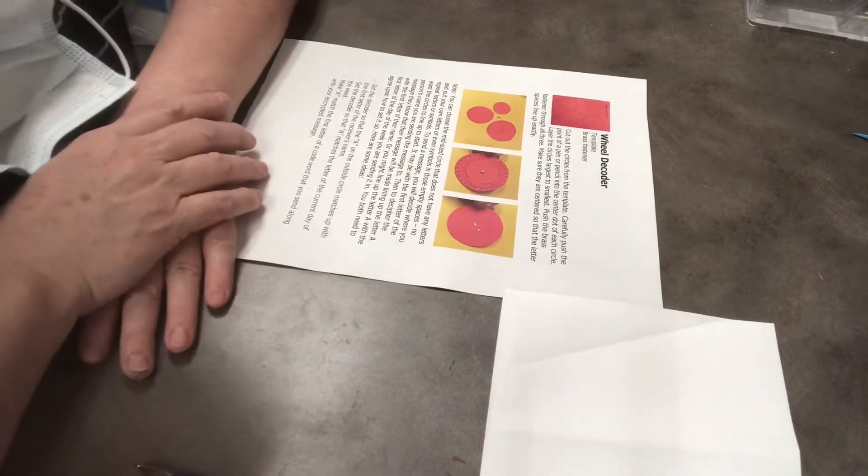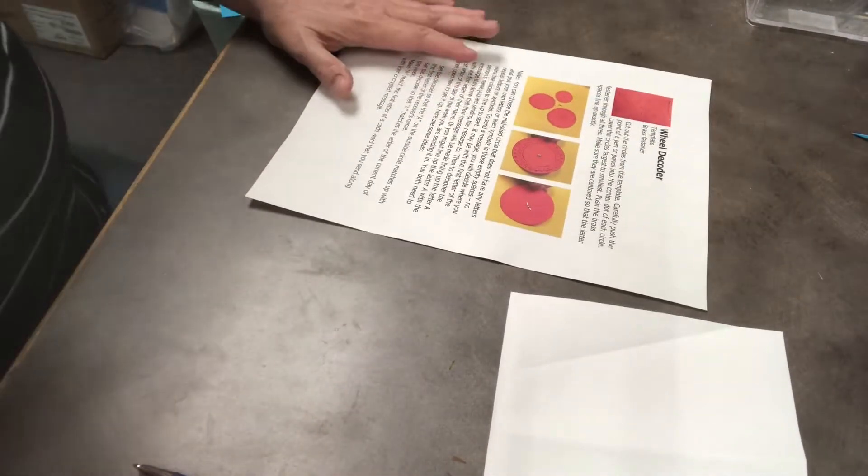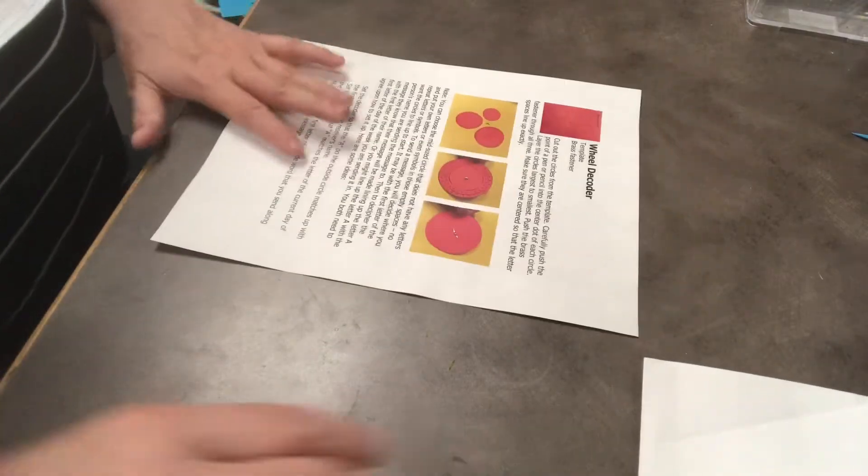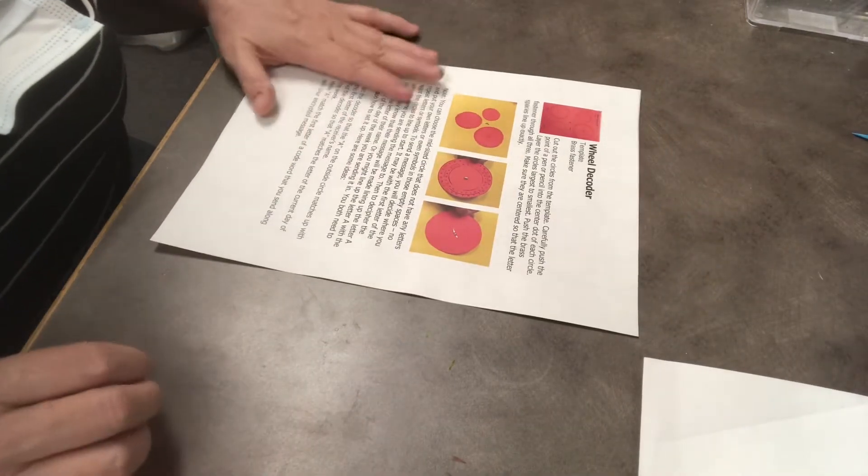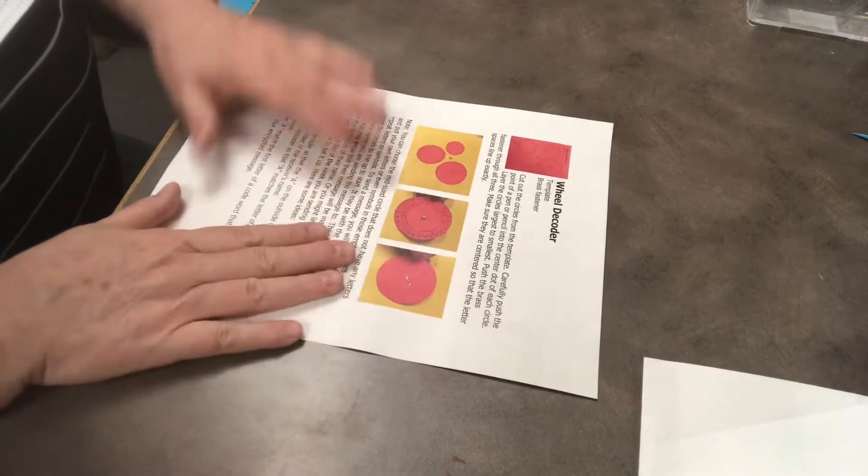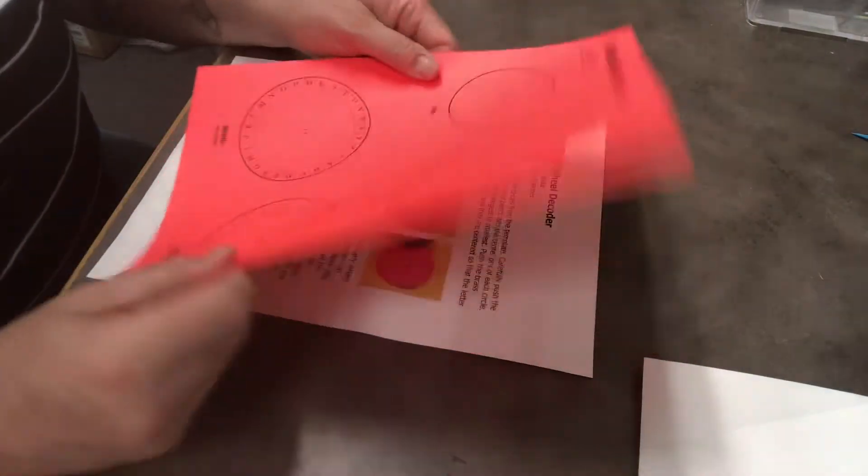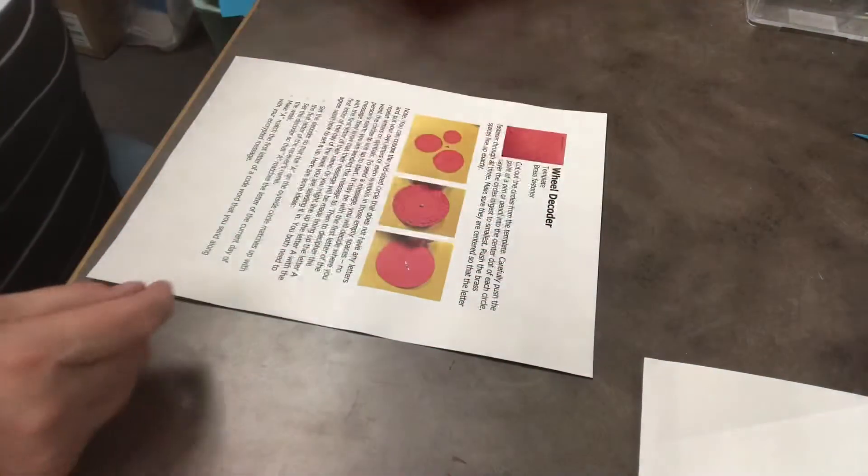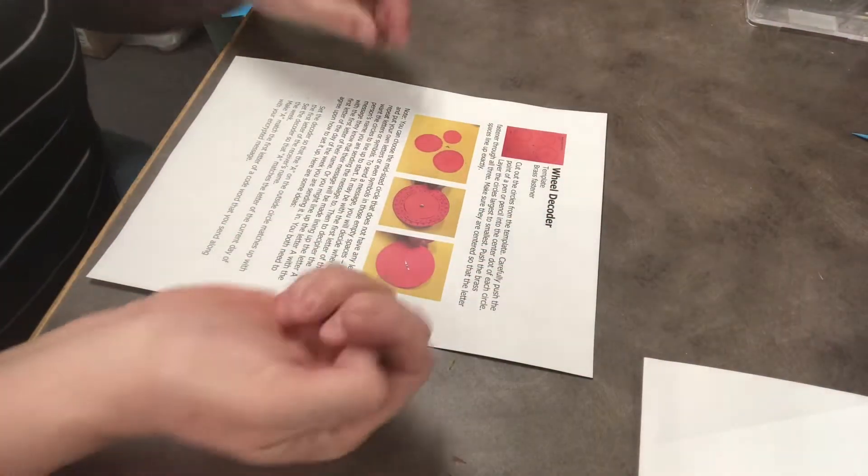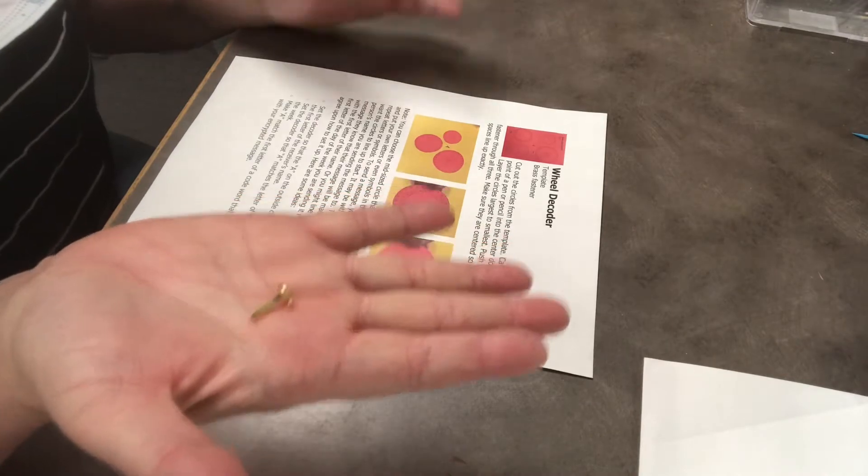This, you and the person that you're sending your messages to will know how to decode it. So it's really great and if somebody doesn't know that then they won't be able to read what you're sending. So you'll get those directions. You'll also get the template on cardstock that you'll be cutting out along with one of these small brass fasteners. And that's it.